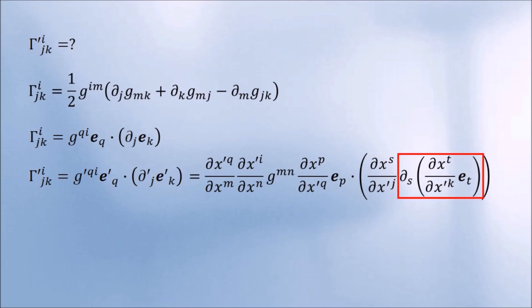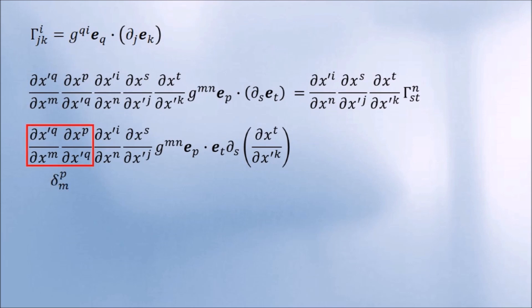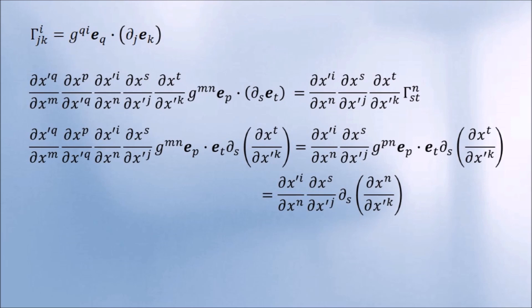Using the chain rule, we obtain this. Let's look at these two terms one by one. The first one has a Kronecker delta here, so it simplifies to this. Where this term is just the Christoffel symbol. The second one also has a Kronecker delta here. And one more. So here's the transformation.